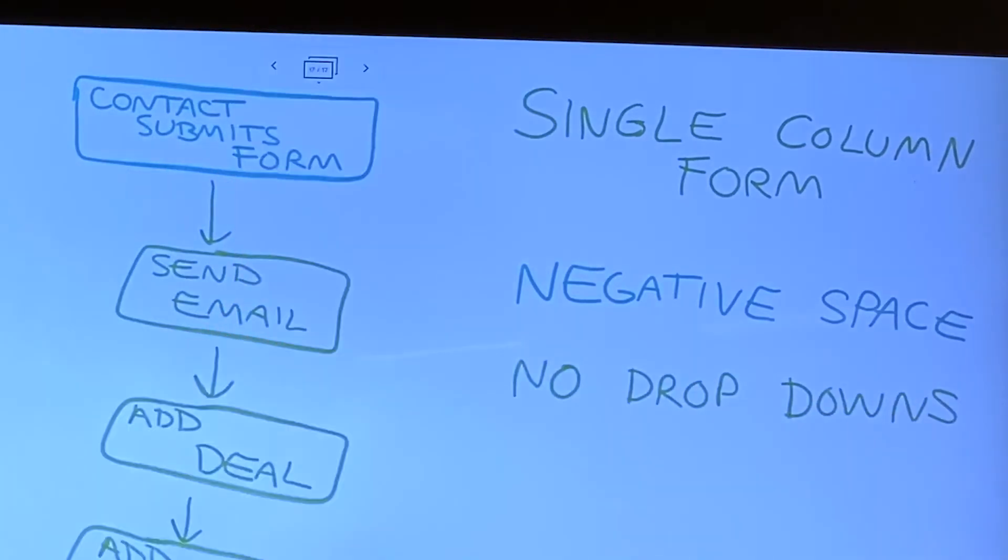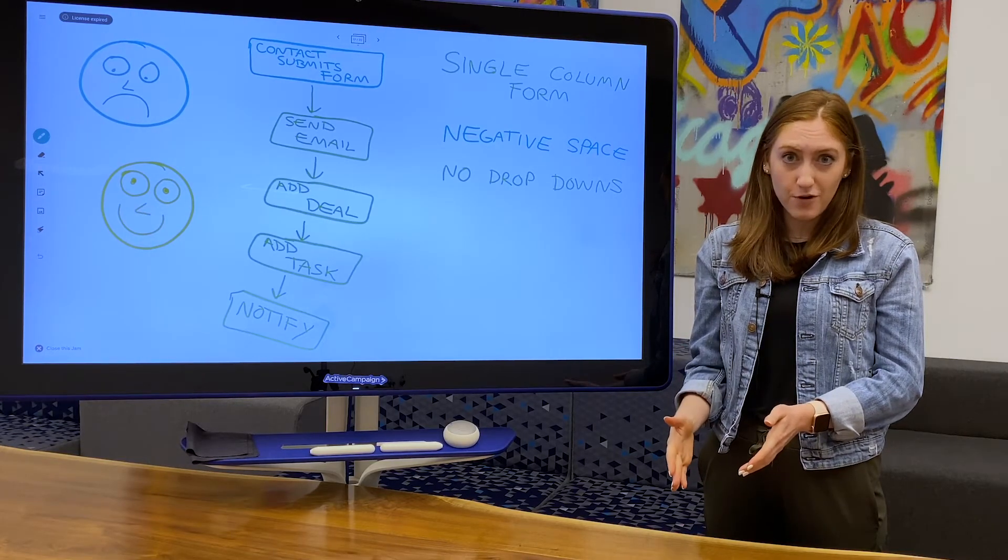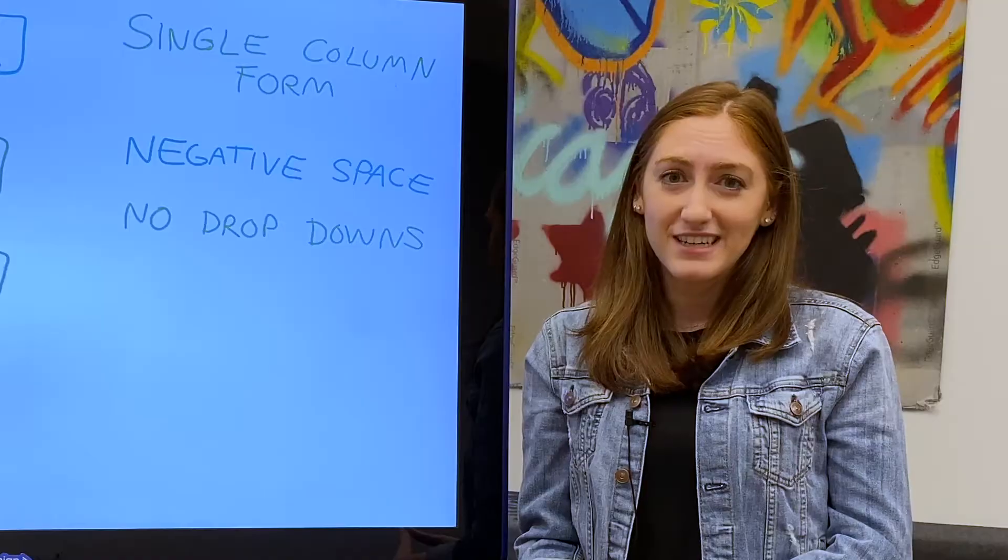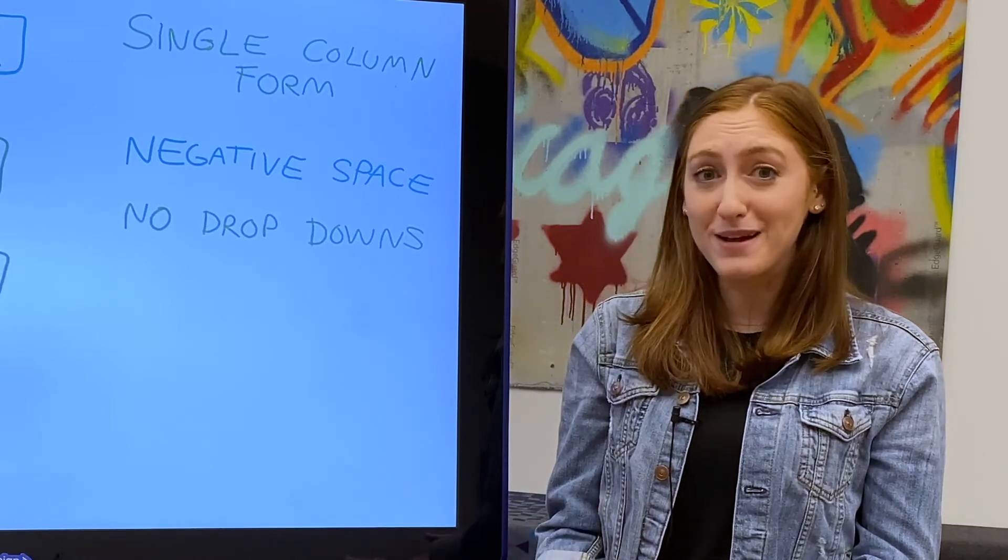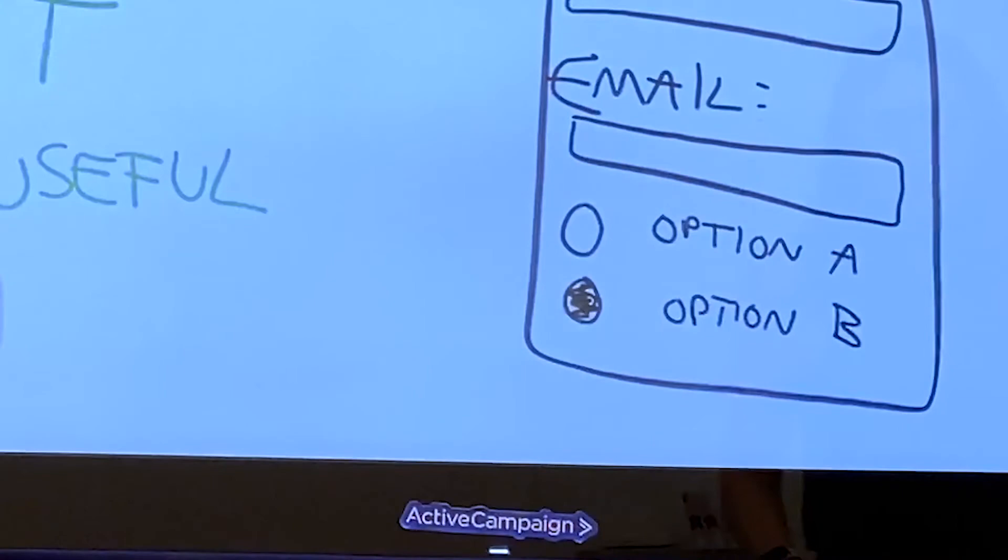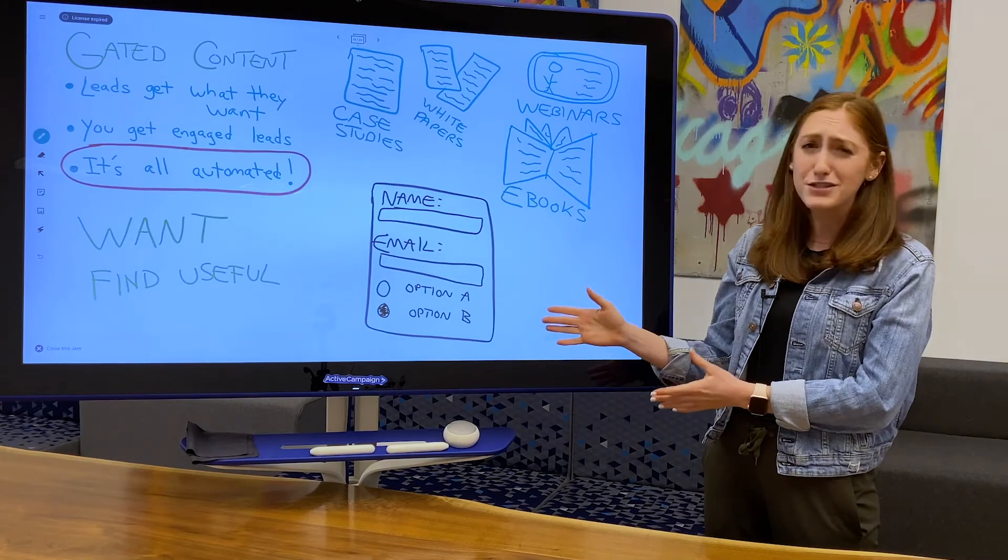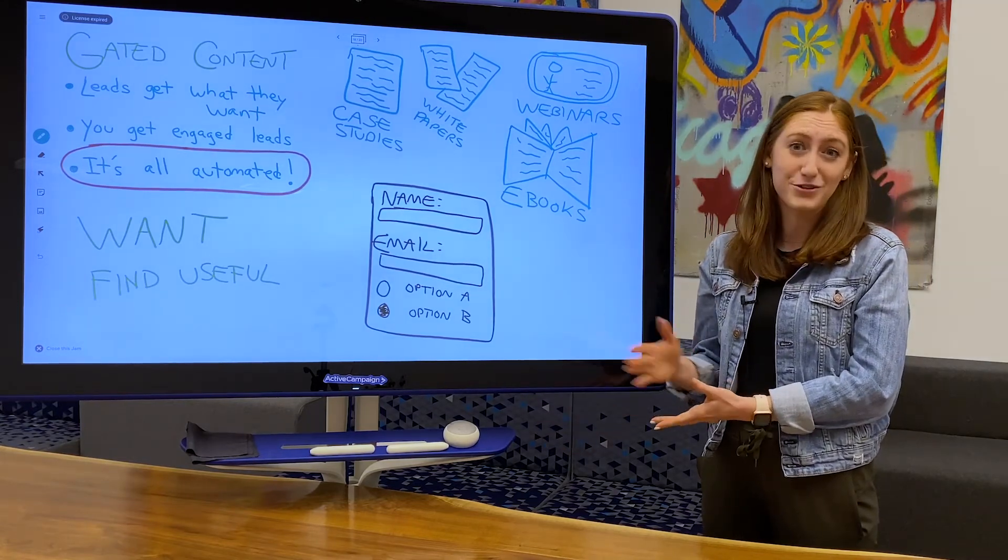Third, ditch the drop downs. Questions on a form that use drop down options slow people down. People are more likely to leave without submitting your form if things are taking too long. Instead of drop downs, use radio buttons to keep your visitors moving along. Radio buttons allow your visitor to choose one option, just like a drop down, but they can see all the options at once, so they don't have to spend extra time clicking through a drop down.